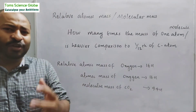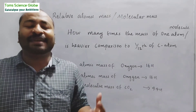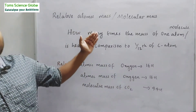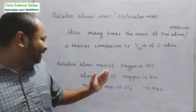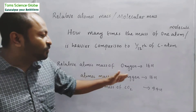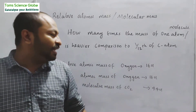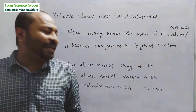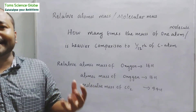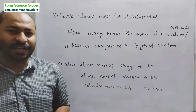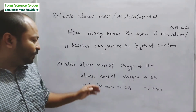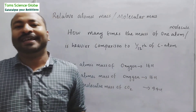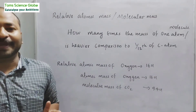We will explain the relative atomic mass and relative molecular mass at a higher level. The atomic mass of oxygen is 16u. For molecular mass, we express the relative molecular mass — for example, carbon dioxide has a molecular mass of 44u.